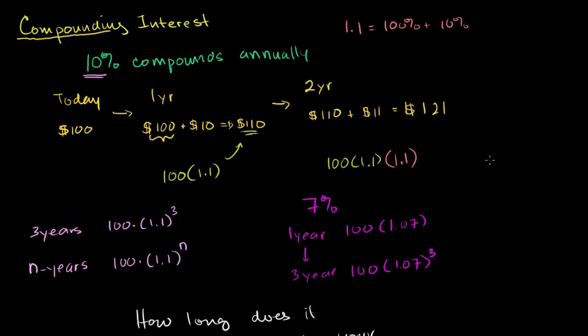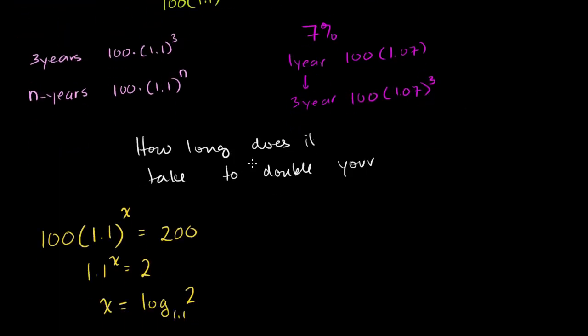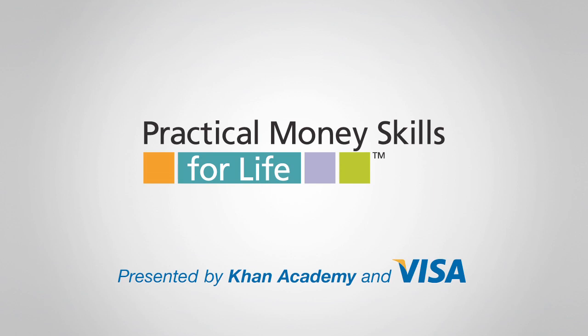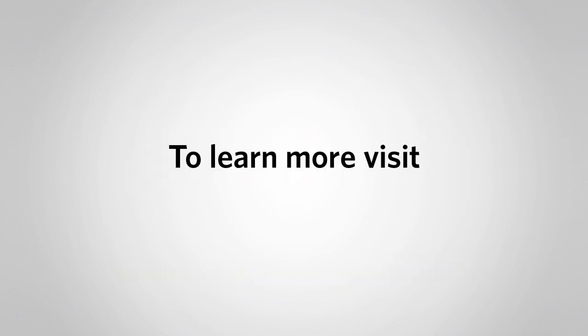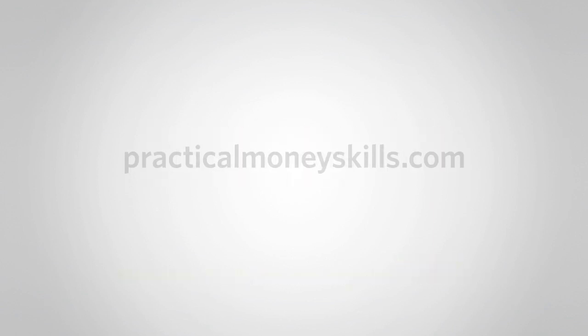So what I'm going to do in the next video is I'm going to explain something called the Rule of 72, which is an approximate way to figure out how long to answer this question. How long does it take to double your money? And we'll see how good of an approximation it is in that next video.